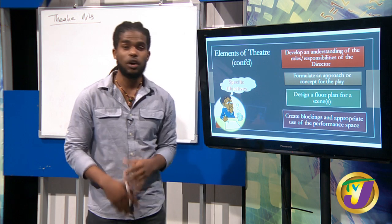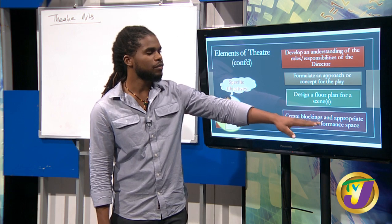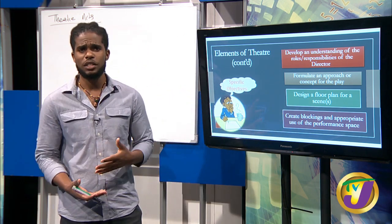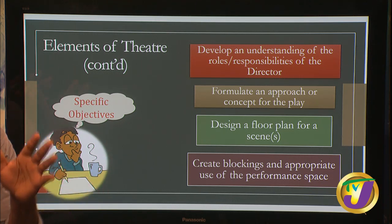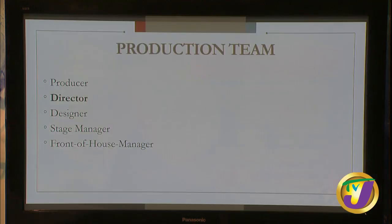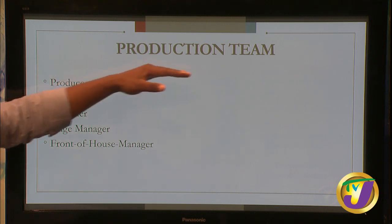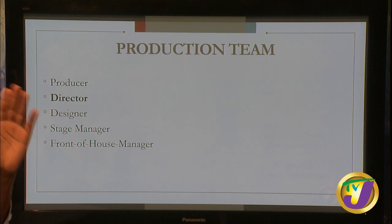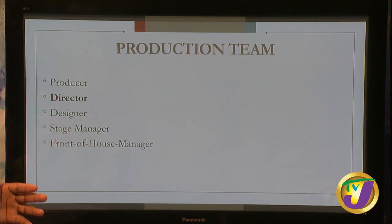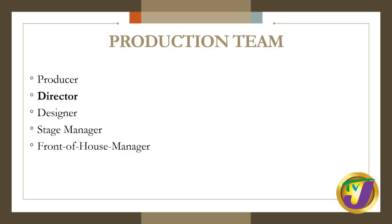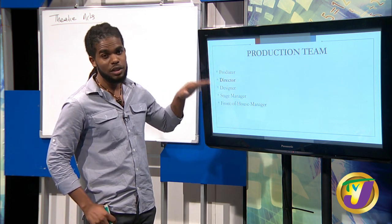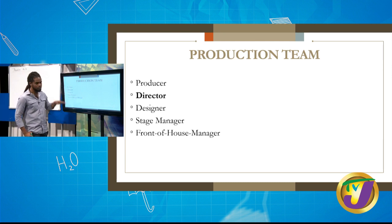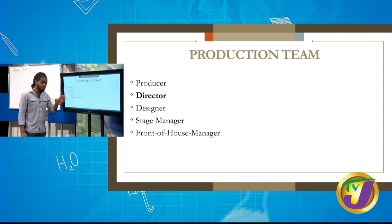We'll design a floor plan for a scene or number of scenes, and create blockings and appropriate use of the performance space — students often struggle with turning their back to the audience. Looking at the director's role and responsibility, we start with the production team: the people responsible for executing an effective production. We have the producer, the director — in bold as a key focus — the designer, stage manager, and front of house manager. Each of these roles is very important to an effective production.